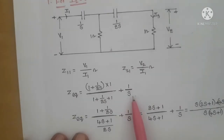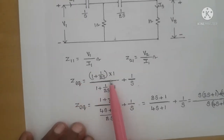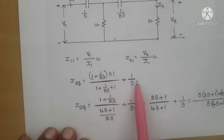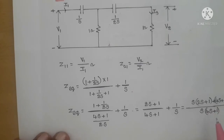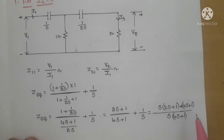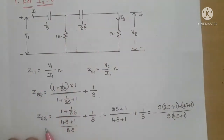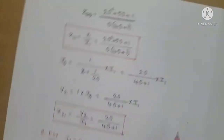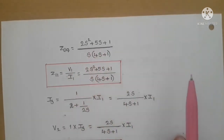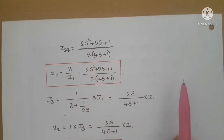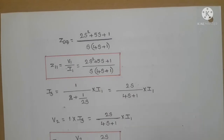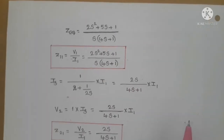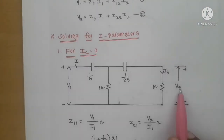Simplifying Z_eq step by step: Z_eq = 1/s + [1·(1 + 1/(2s))] / (2 + 1/(2s)). Multiplying through and collecting terms gives Z_eq = (2s² + 5s + 1) / [s(4s + 1)]. So Z11 = (2s² + 5s + 1) / [s(4s + 1)].